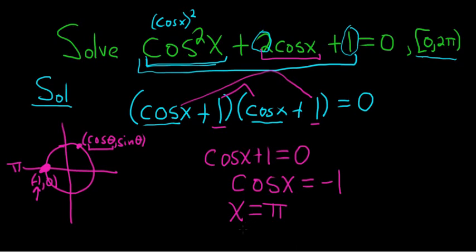Are there other answers where this is true? Yes, but they're not inside this interval 0 to 2π. This is 0, which is the same thing as 2π. This is π over 2, and this is 3π over 2. You'd have to go all the way back around the unit circle to get back to negative 1. So the only answer in this case is x equals π. I hope that made sense.